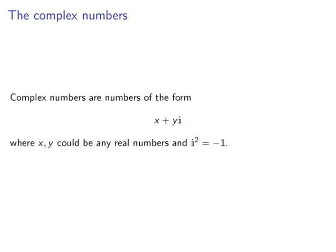It was largely due to the cubic formula that complex numbers were accepted as numbers. Complex numbers are numbers of the form x plus yi, where x and y could be any real numbers, and i squared is minus 1. That is, i itself is a square root of minus 1.